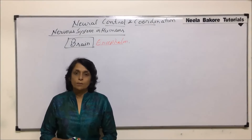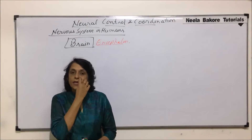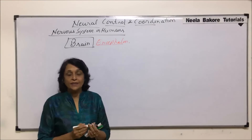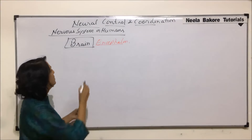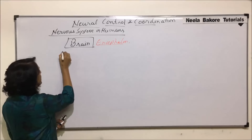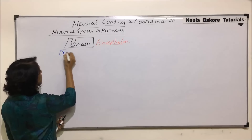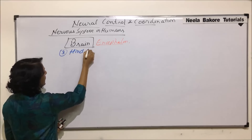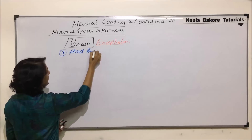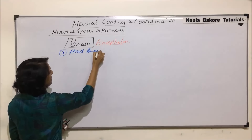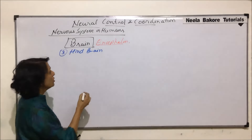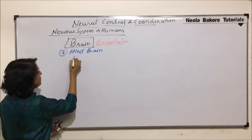In this part, we will take up the last part of the brain, that is, the hind brain. This is the third part, which is also known as rhombencephalon.